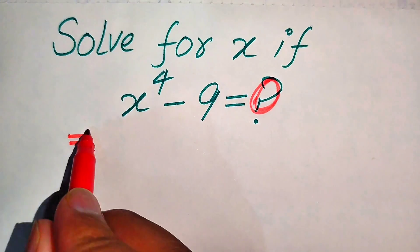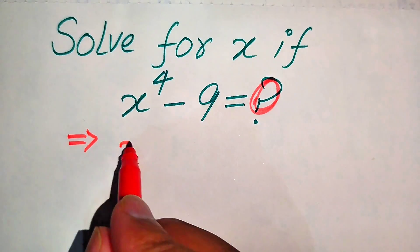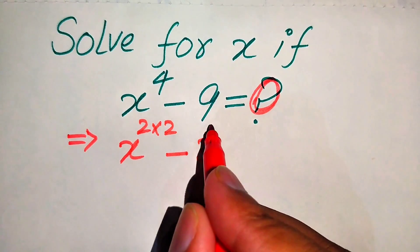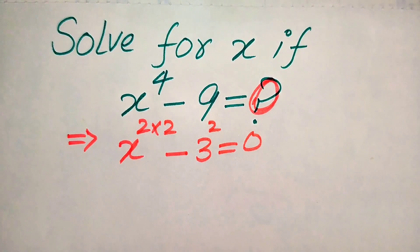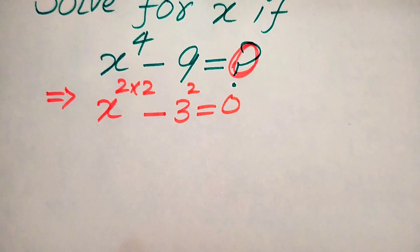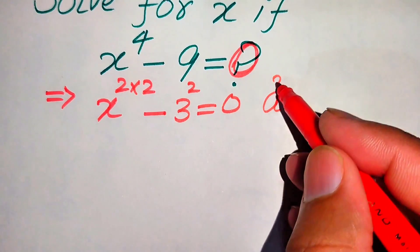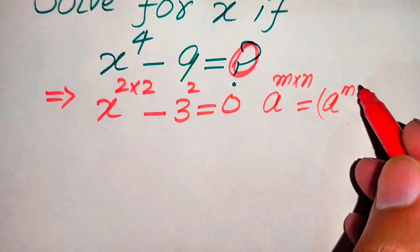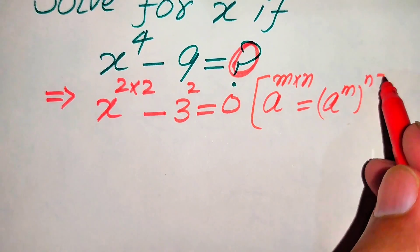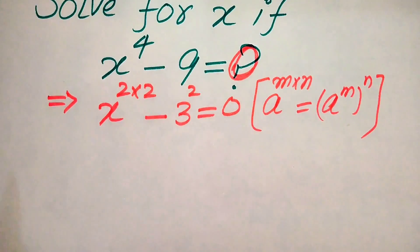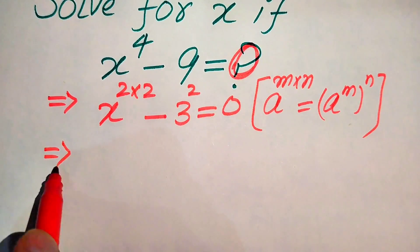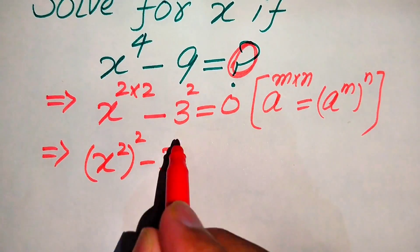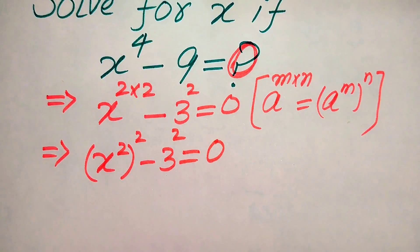The very first thing we are going to do is rewrite this equation. We write x to the power of 4 as 2 multiplied by 2, and we write 9 as 3 squared, so the equation becomes x^(2×2) minus 3² equals to 0. We then apply the exponent law: a to the power of m×n equals a to the power of m to the power of n. According to this law, we move the 2 inside and it becomes x squared, whole squared, minus 3 squared equals to 0.